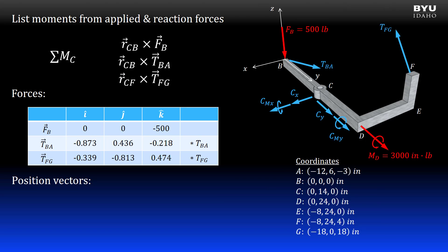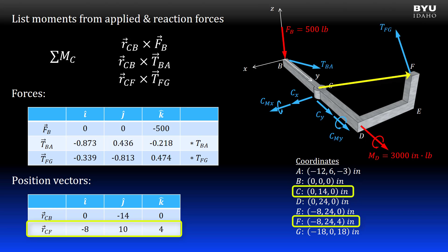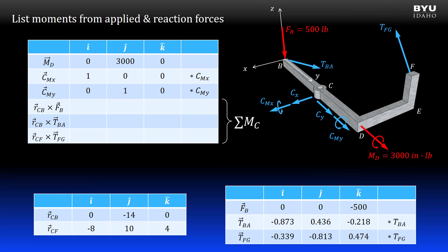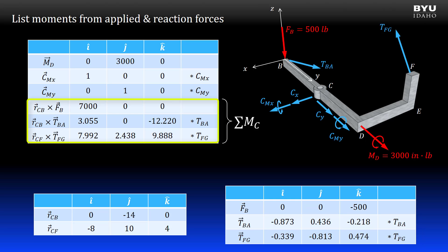The three additional moments are: a position vector from C to B crossed with force FB, a position vector from C to B crossed with force TBA, and a position vector from C to F crossed with force TFG. Since we are summing moments about point C, we need two unique position vectors RCB and RCF. RCB is found using the coordinates for points B and C — remember that the position vector originates at the point we are summing moments about. I get RCF using the coordinates for points F and C. I cross RCB with FB, RCB with TBA, and RCF with TFG. Note that I leave the magnitudes TBA and TFG out of the vectors because they are scalars, based on the scalar multiplication rule of the cross product. Our list of vectors is now complete.